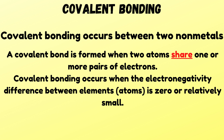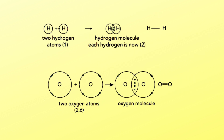Covalent bonding occurs between two non-metals when two atoms share one or more pairs of electrons, resulting in a covalent bond. This occurs when there is a relatively small or zero electronegativity difference. Examples include the hydrogen molecule formed between two hydrogen atoms, and the oxygen molecule formed between two oxygen atoms.